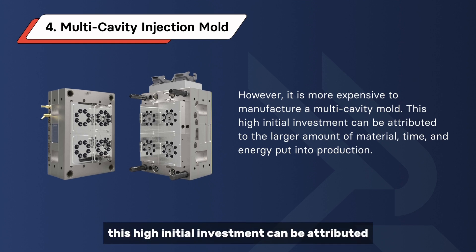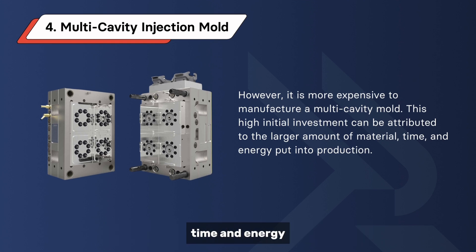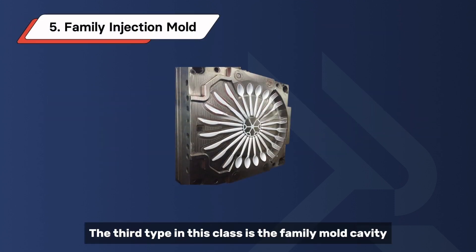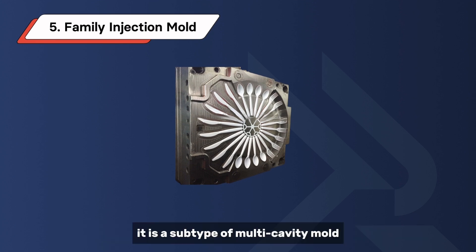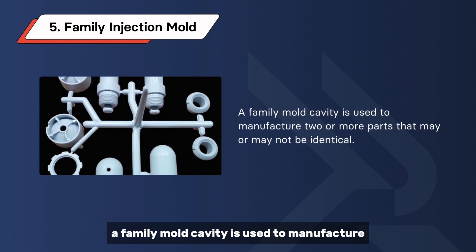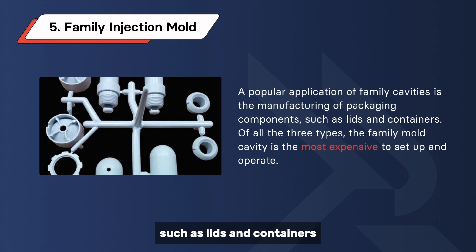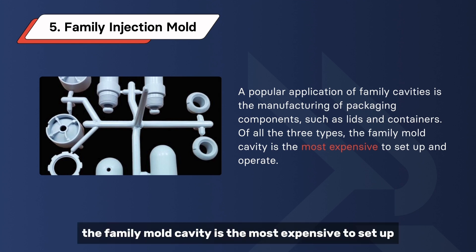This high initial investment can be attributed to the larger amount of material, time, and energy put into production. The third type in this class is the family mold cavity. It is a subtype of multi-cavity mold with added benefits, used to manufacture two or more parts that may or may not be identical. A popular application is the manufacturing of packaging components such as lids and containers. Of all three types, the family mold cavity is the most expensive to set up and operate.